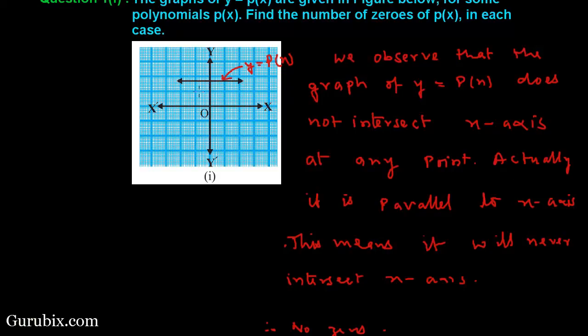Therefore, it will never intersect the x-axis, and if it will never intersect the x-axis, then there are no zeros of this polynomial. This is the solution of the question. Thank you.